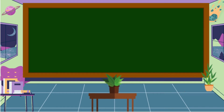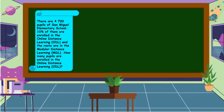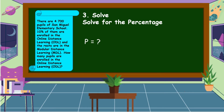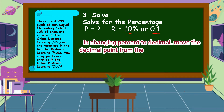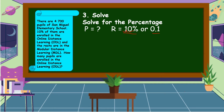Since we have already a plan, let's carry out the plan and solve the problem. We're going to solve for the percentage. Percentage is unknown. Rate is equal to 10% or one-tenth. Always remember that you should change percent to decimal by moving the decimal point from the right going to the left two decimal places. Therefore, 10% is equal to one-tenth.